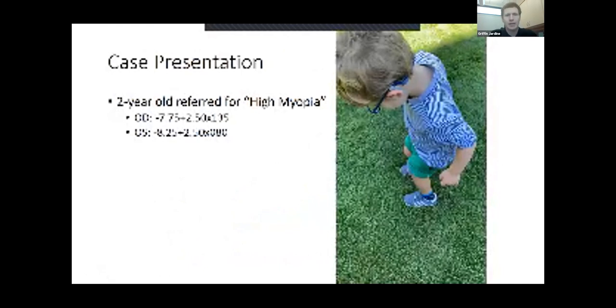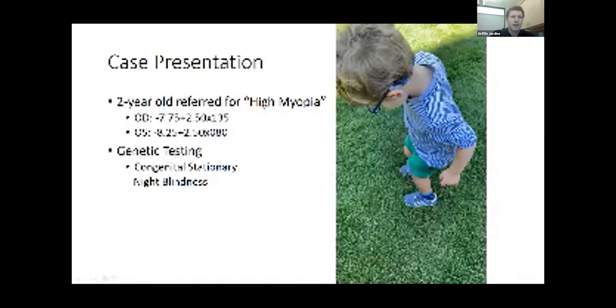Let me end with another case presentation. This is a sweet two-year-old boy referred to me for high myopia. He was wearing a pair of glasses, but on my exam the cycloplegic refraction was about double what they had estimated. He was nearly minus eight in both eyes with some oblique astigmatism. This is pretty unusual. When we see this high degree of myopia this early in age, I typically refer for genetic testing. This child unfortunately came back positive for congenital stationary night blindness, which is associated with early high myopia.